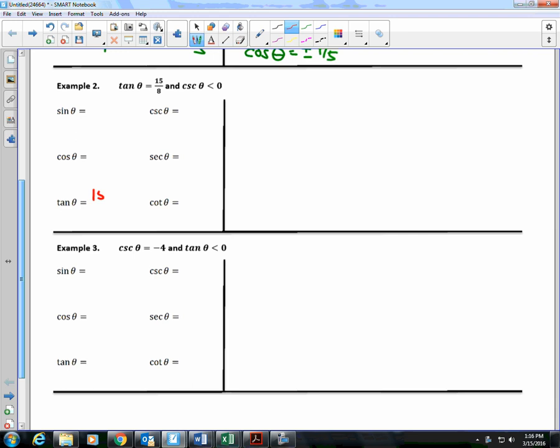Tangent, first of all, is 15 over 8. So, therefore, cotangent is 8 over 15. Everybody will write that much on the test every week.